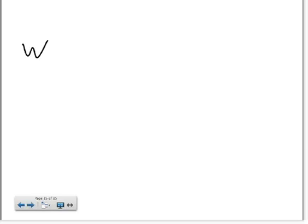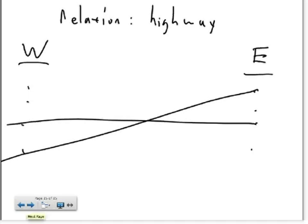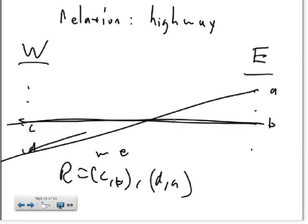An example of a real-world usage of a relation would be where you have two groups of cities: West Coast cities and East Coast cities. We could declare a relation to be anywhere there's a highway between those two cities. So if there's a highway from city C to city B, the relation could be written as (C, B). And also in that relation there would be (D, A) because there exists a highway from D to A.